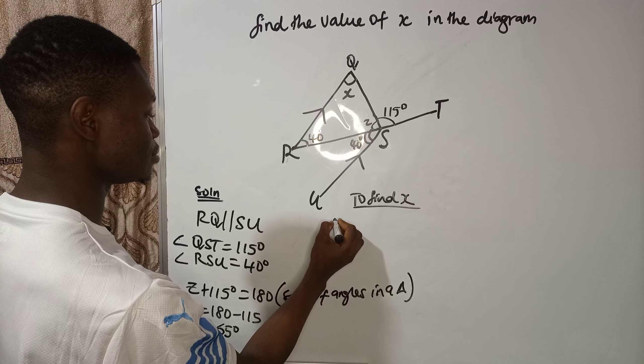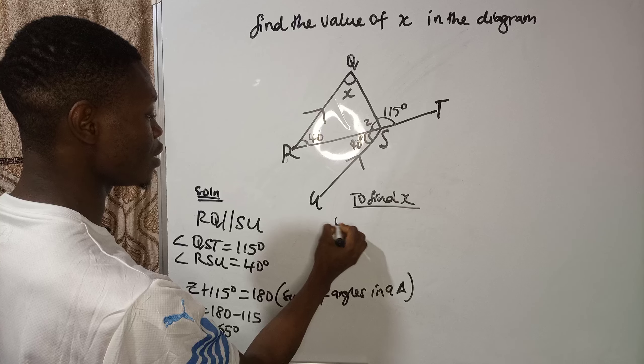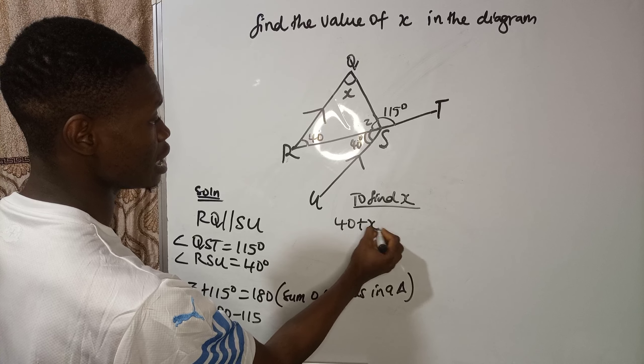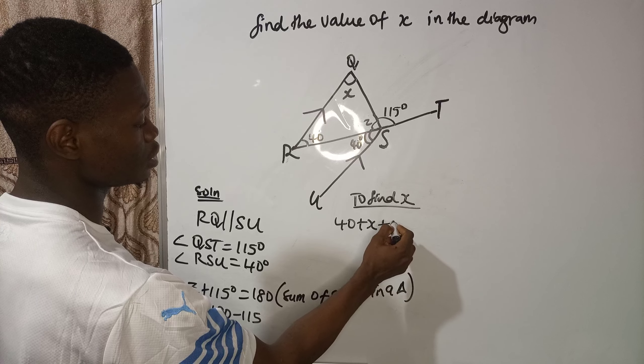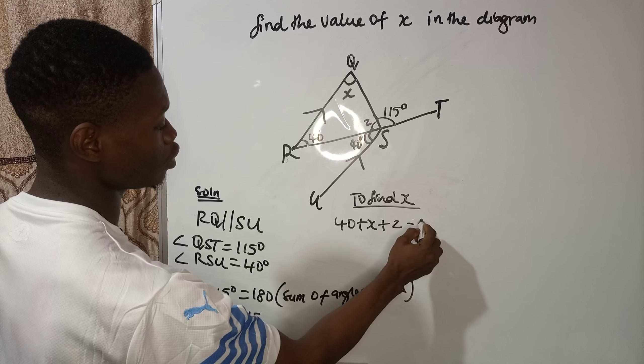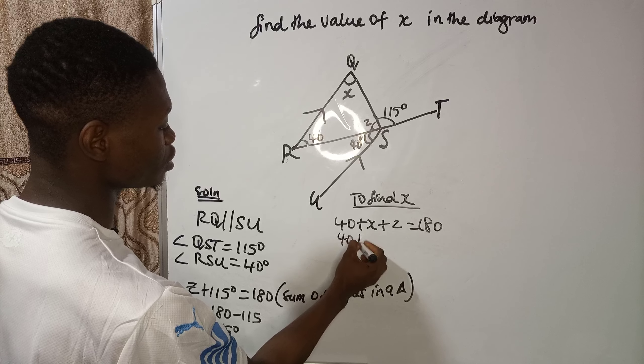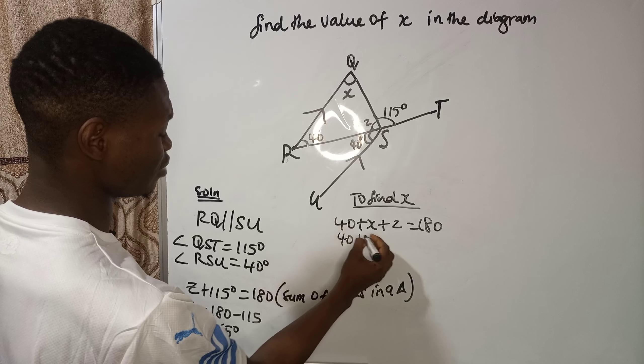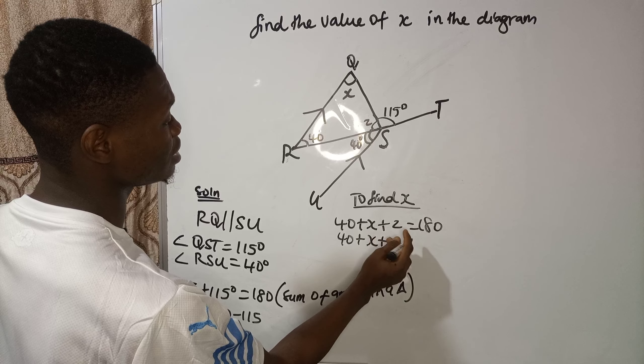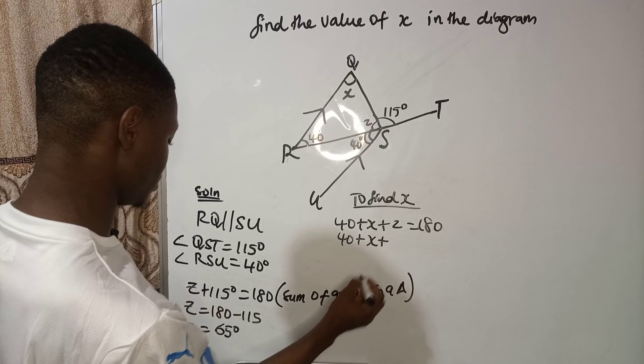So I can say that 40 plus Z is equal to 180. So 40 plus Z is what? 65.